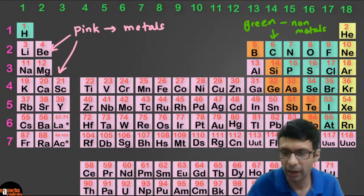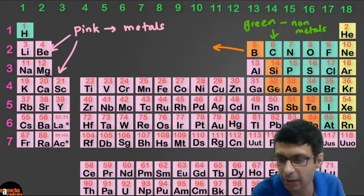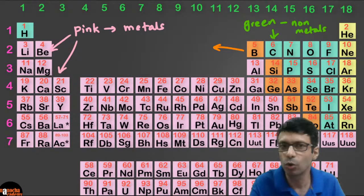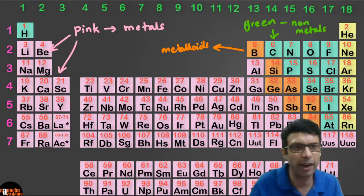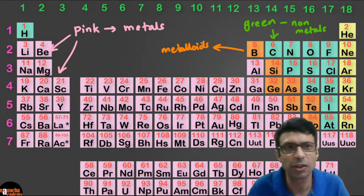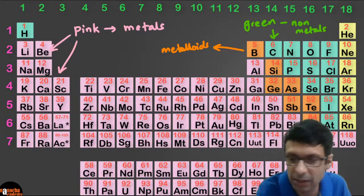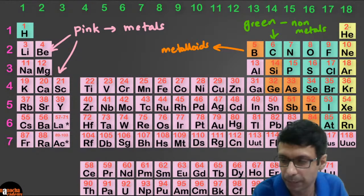The orange ones — boron, silicon, germanium, arsenic — these are called metalloids. They have properties of both metals and non-metals. The yellow ones at the end are the noble gases.